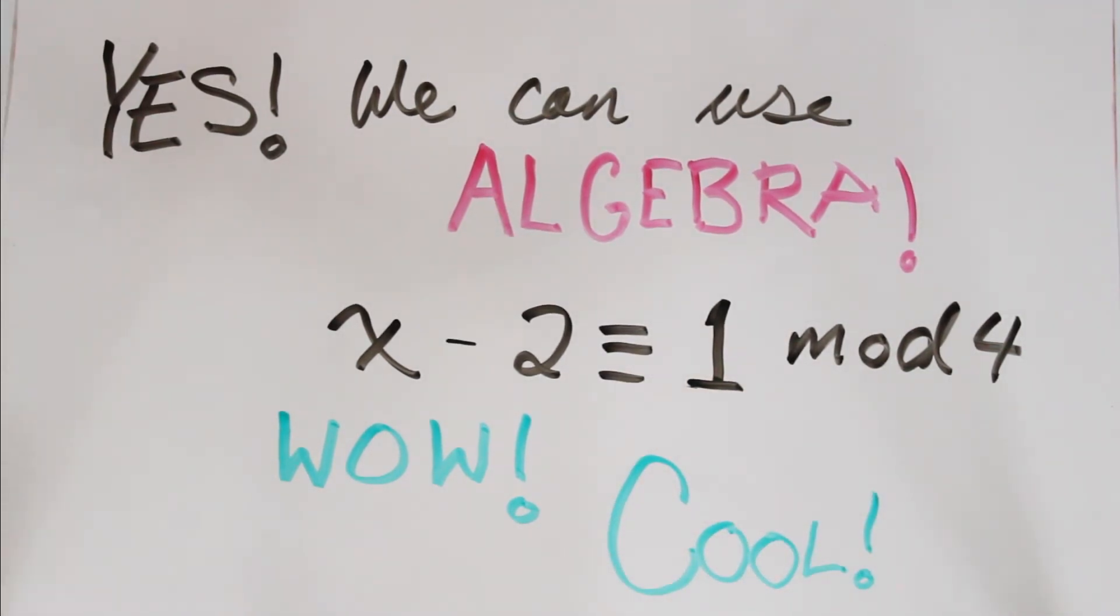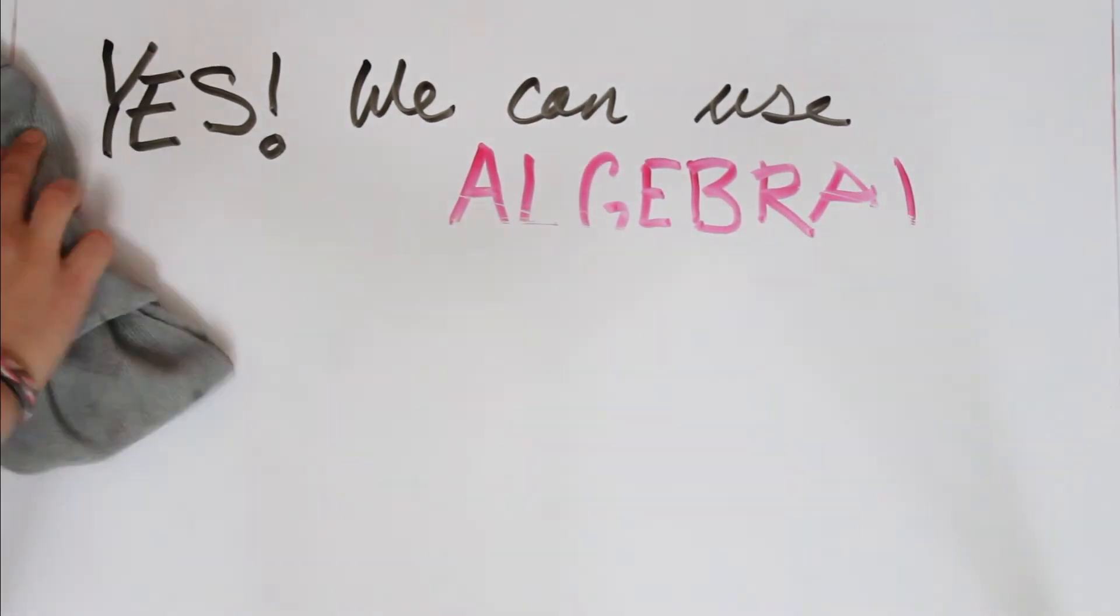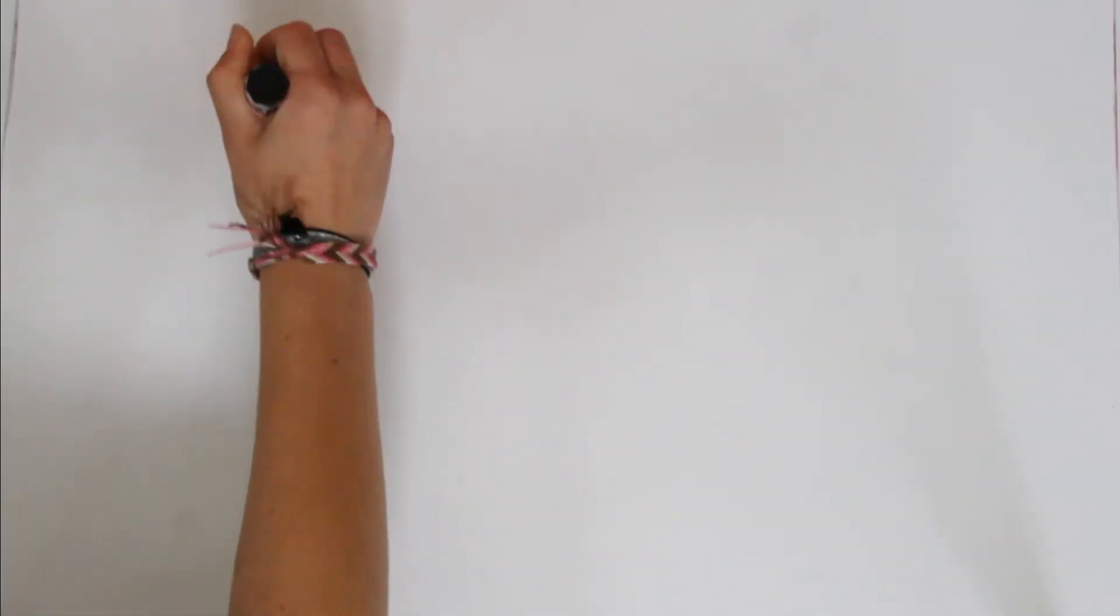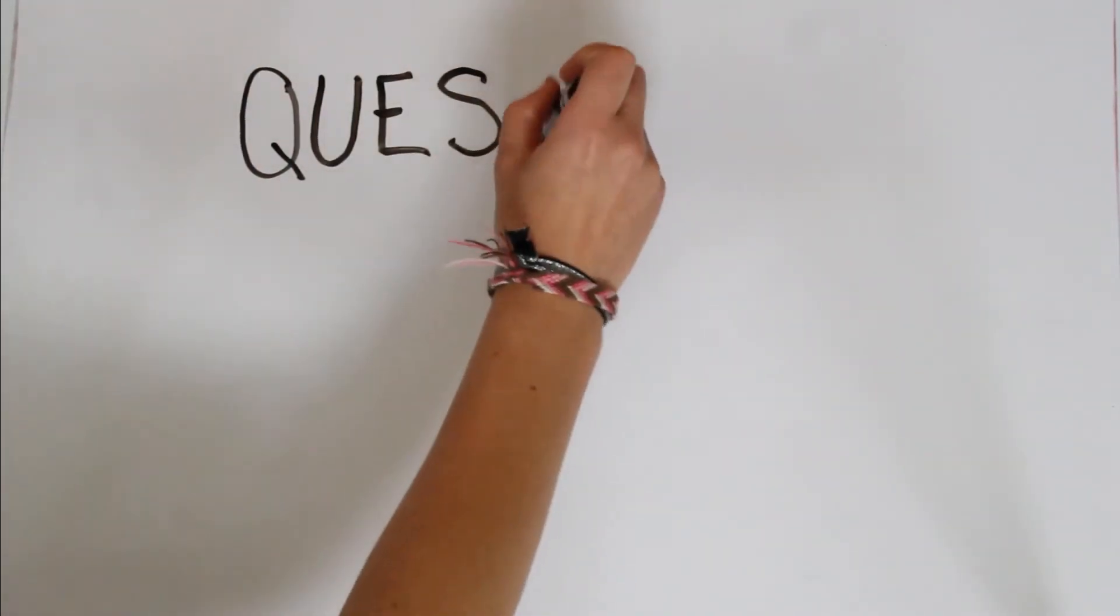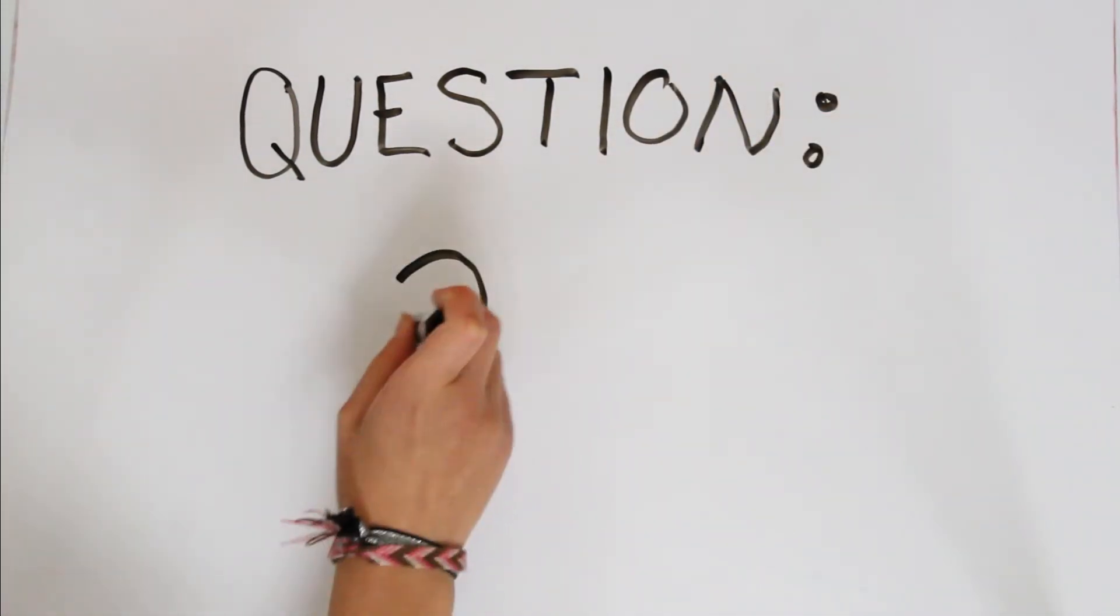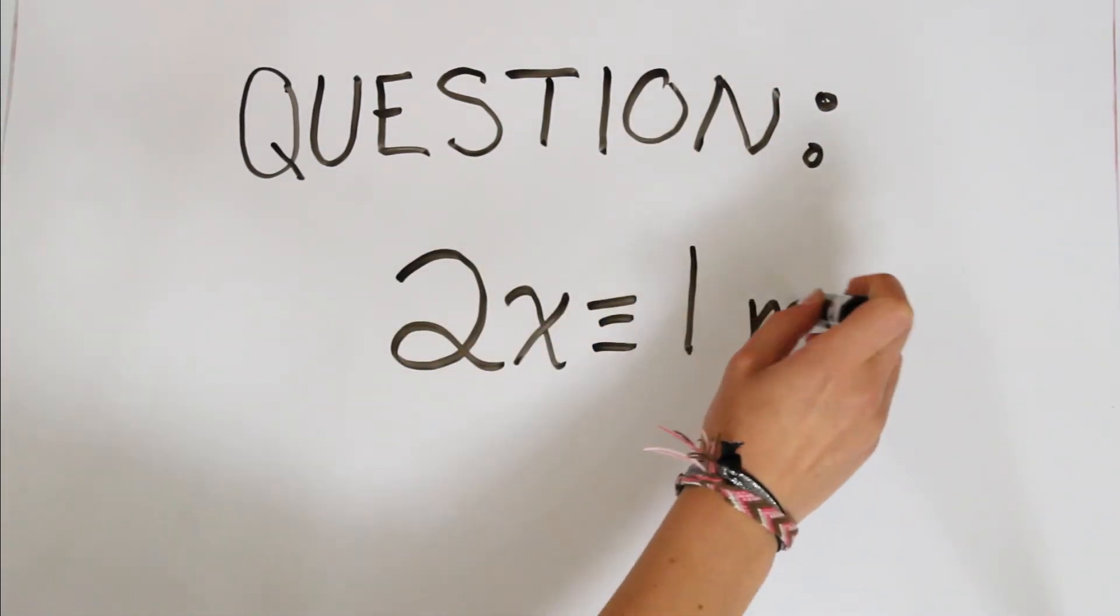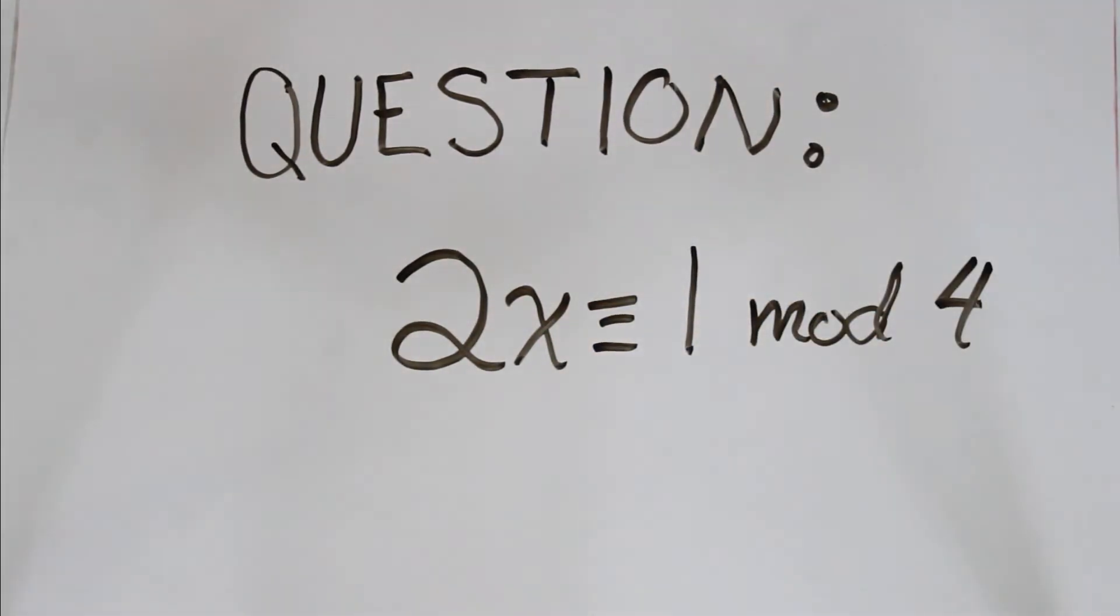A question that I have to leave you guys with is: how do we do division in the modular world? So consider 2x is congruent to 1 mod 4.